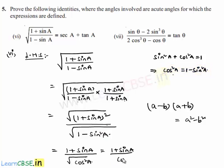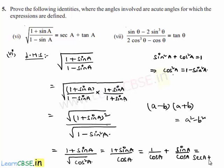Square root of cos squared A is nothing but cos A. So we get 1 plus sin A divided by cos A, which equals 1 by cos A plus sin A by cos A, which is nothing but secant A plus tan A. Hence LHS equals RHS, and we have proved that root of 1 plus sin A by 1 minus sin A is equal to secant A plus tan A.